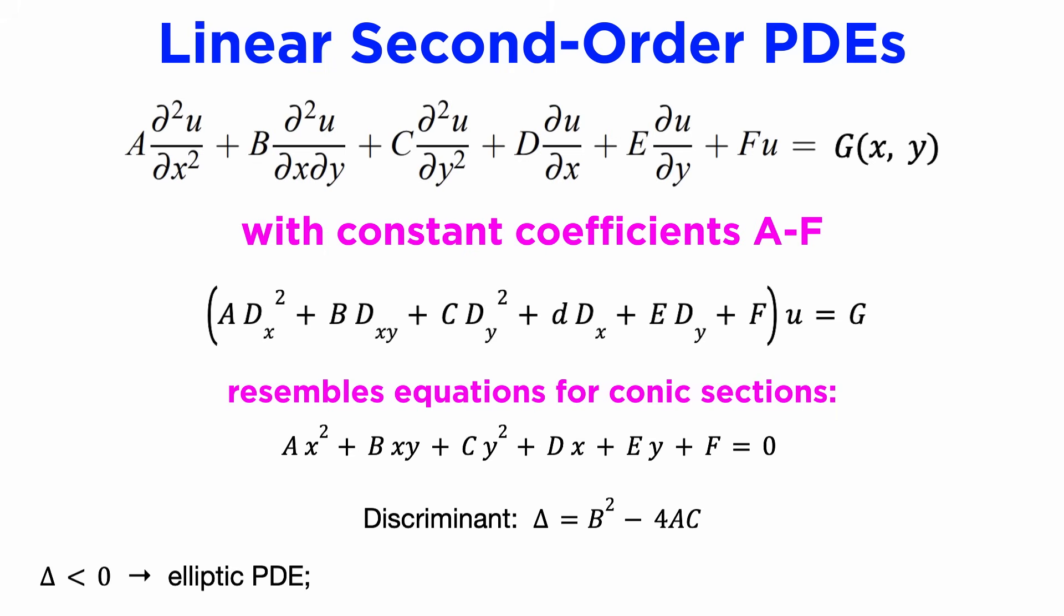we say the PDE is of the elliptic type. If the discriminant is 0, it is the parabolic type, and if the discriminant is positive, it is the hyperbolic type. Each type of PDE has solutions that behave differently.